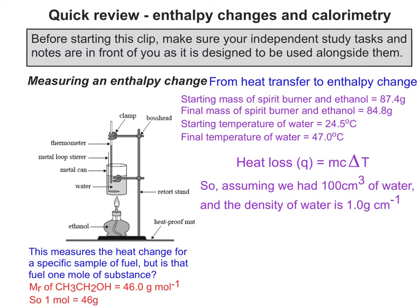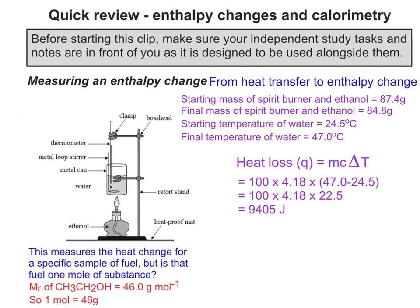Before calculating Q, note that we may be given the volume of water rather than its mass. If we had 100 cm³ of water and the density of water is 1 g cm⁻³, then 100 cm³ has a mass of 100 g. Putting the numbers in gives us 9,405 joules. So the heat we managed to measure is 9,405 J — it may not be the actual heat released by the reaction, but it's the amount we picked up.